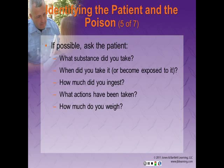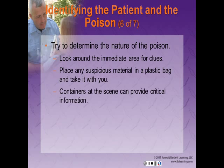If at all possible, find out from your patient: What substance did they ingest? When did they ingest or become exposed to it? How much did they take? What actions have been taken? And how much do they weigh? Weight is an important component of the history. Also attempt to determine the nature of the poison. Look around the immediate area for overturned bottles, needles or syringes, scattered pills, chemicals, or even an overturned or damaged plant. Place any suspicious material in a plastic bag and take it with you to the hospital.